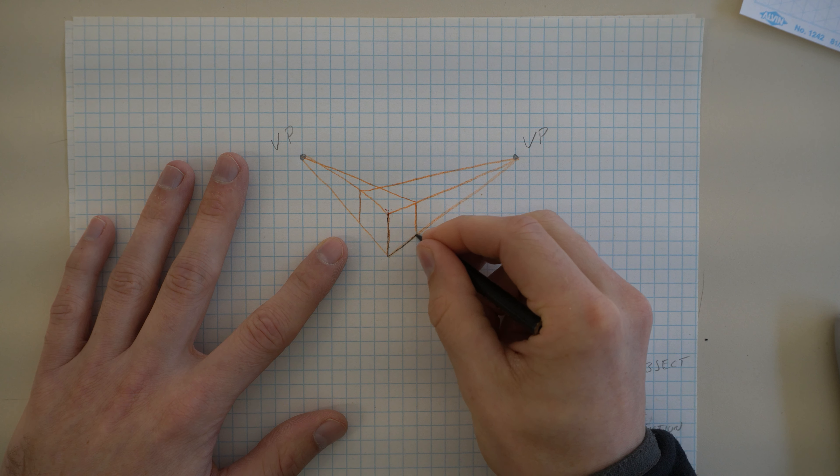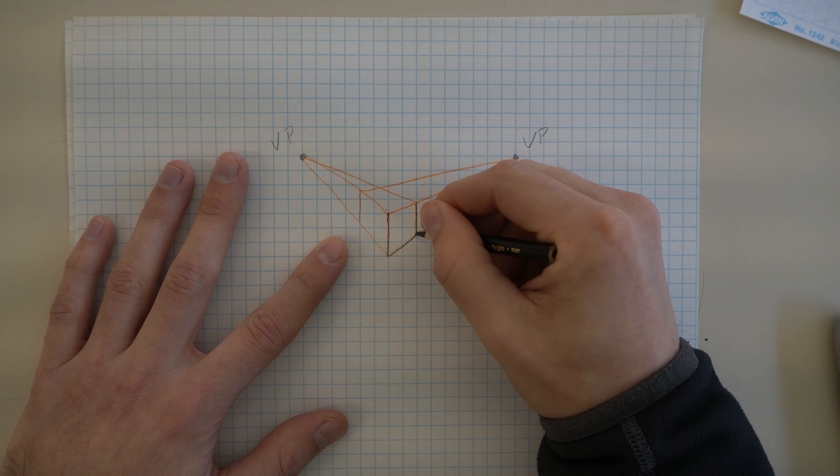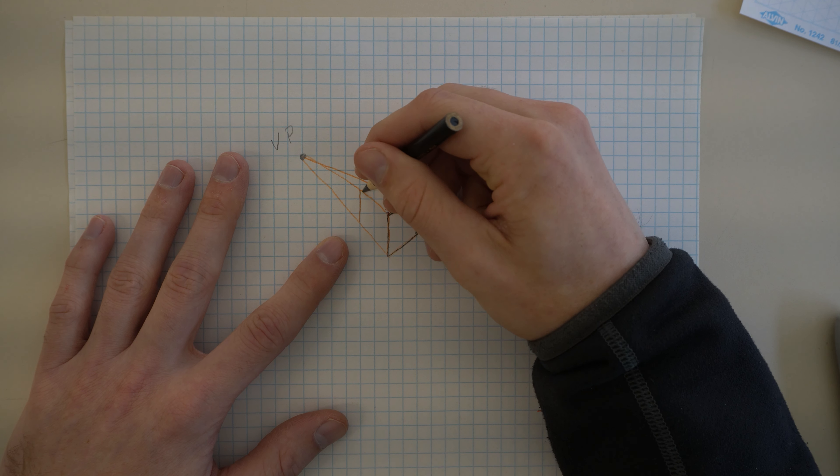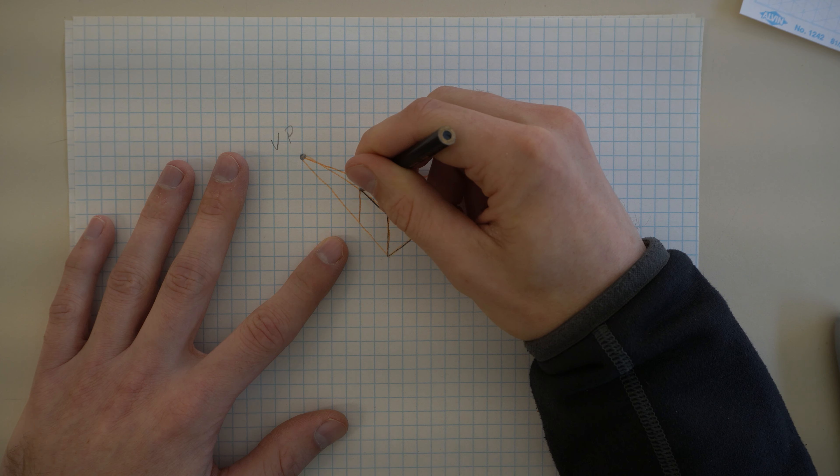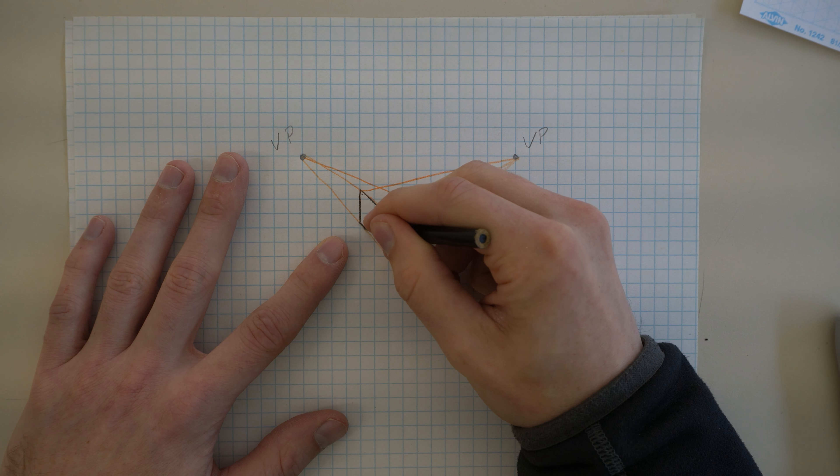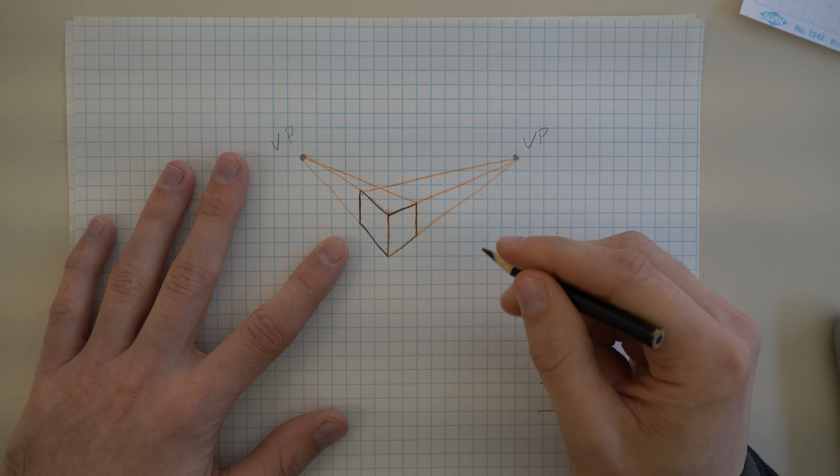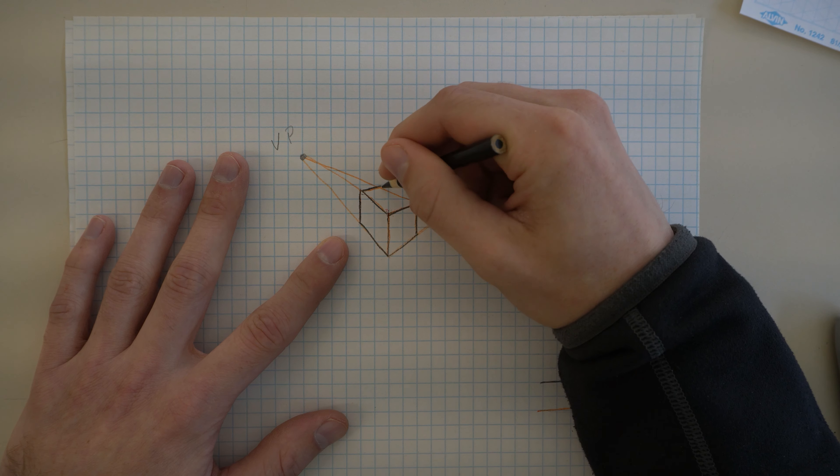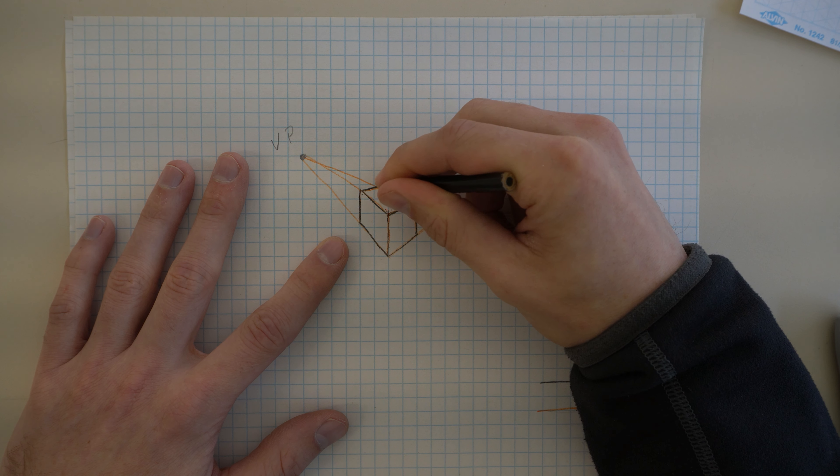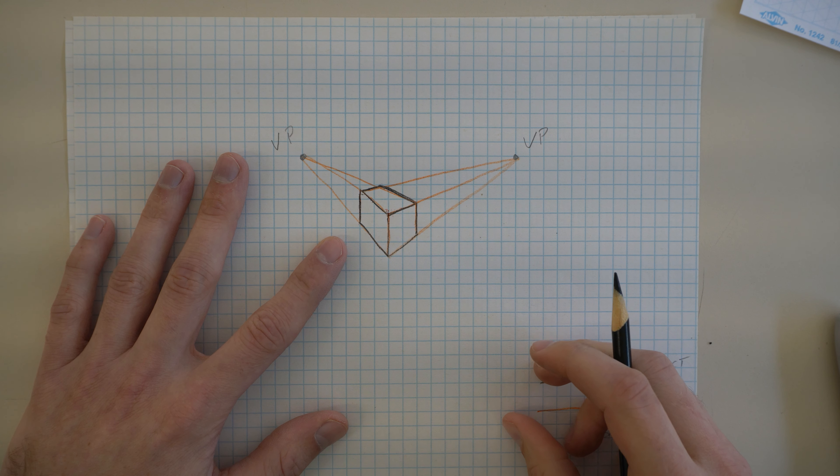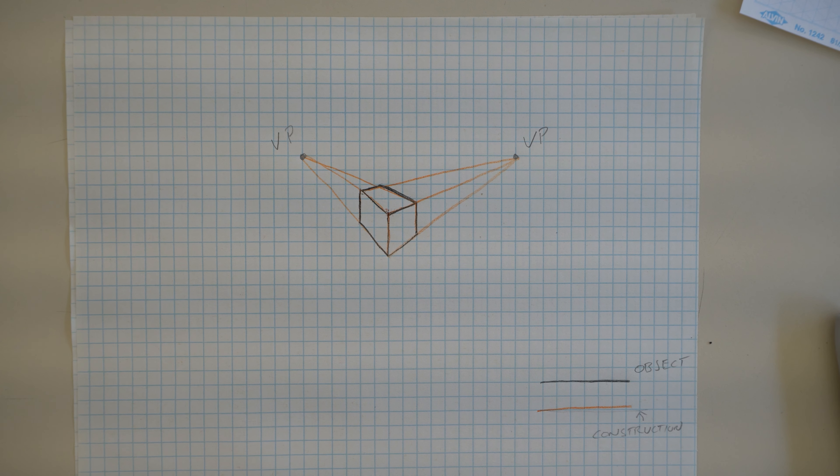We go in then and we can darken in what we would choose to keep with the black. And once this is accomplished, you have your finished shape. So that is the basic of two-point perspective.